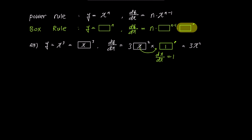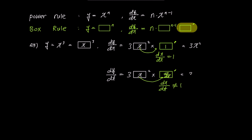Now, let's handle the problem slightly differently and find dy over dt this time. Similar to the previous result, it becomes 3 times x squared times box prime, but this time we need to differentiate the x inside the box with respect to t, so it becomes dx over dt. Unlike the previous result, the box prime doesn't become 1, but remains as dx over dt, ultimately resulting in 3x squared times dx over dt.